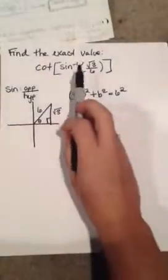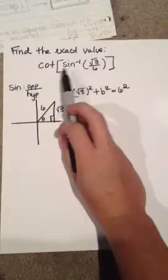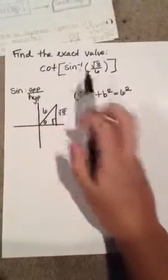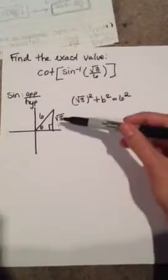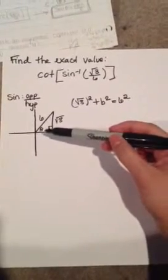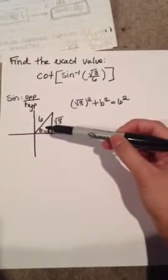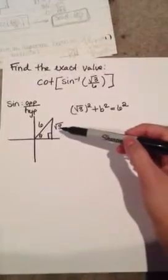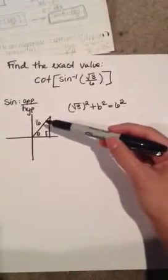So you want to find the cotangent since you have sine with inverse sine. I started doing sine in SOHCAHTOA, which is opposite over hypotenuse. So you want to draw a right triangle and do opposite over hypotenuse and plug it in. The opposite is square root of 3 and hypotenuse is 6.